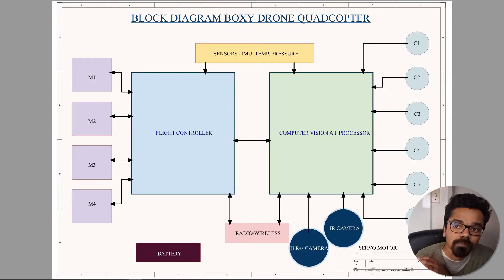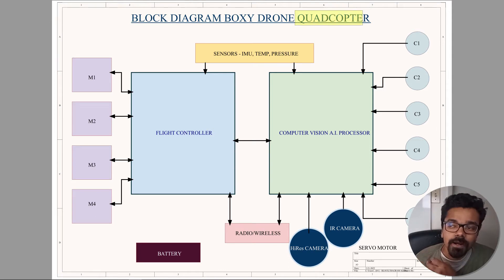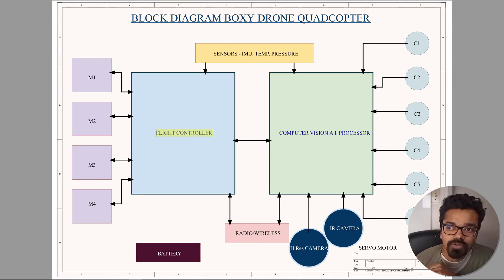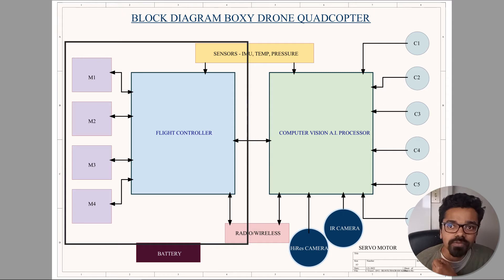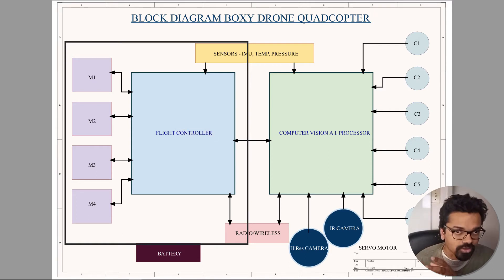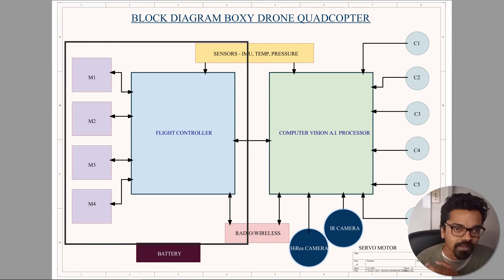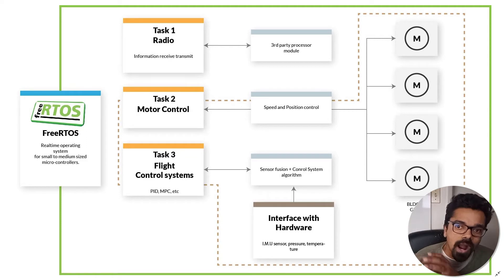In the previous video I spoke about how I'm going to divide the architecture: one part for flight control and one for computer vision and AI processing. The computer vision side will mostly run on embedded Linux, and I plan to use FreeRTOS for the flight controller. Today's video is about how I'm going to design that flight controller software and how everything fits together with context switching and a real-time operating system.